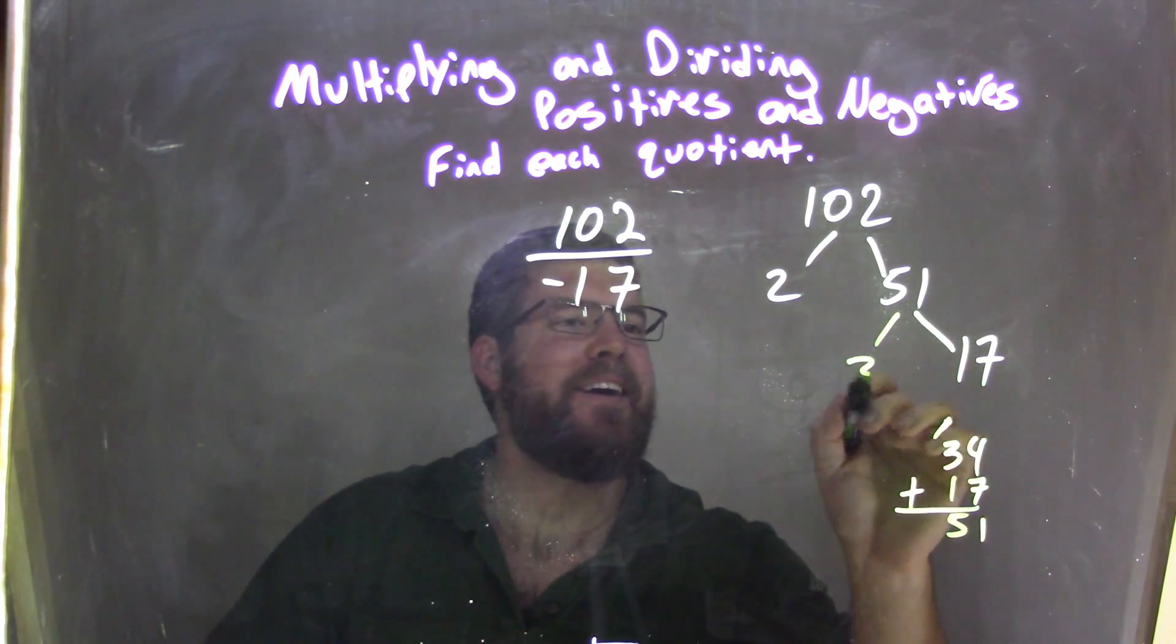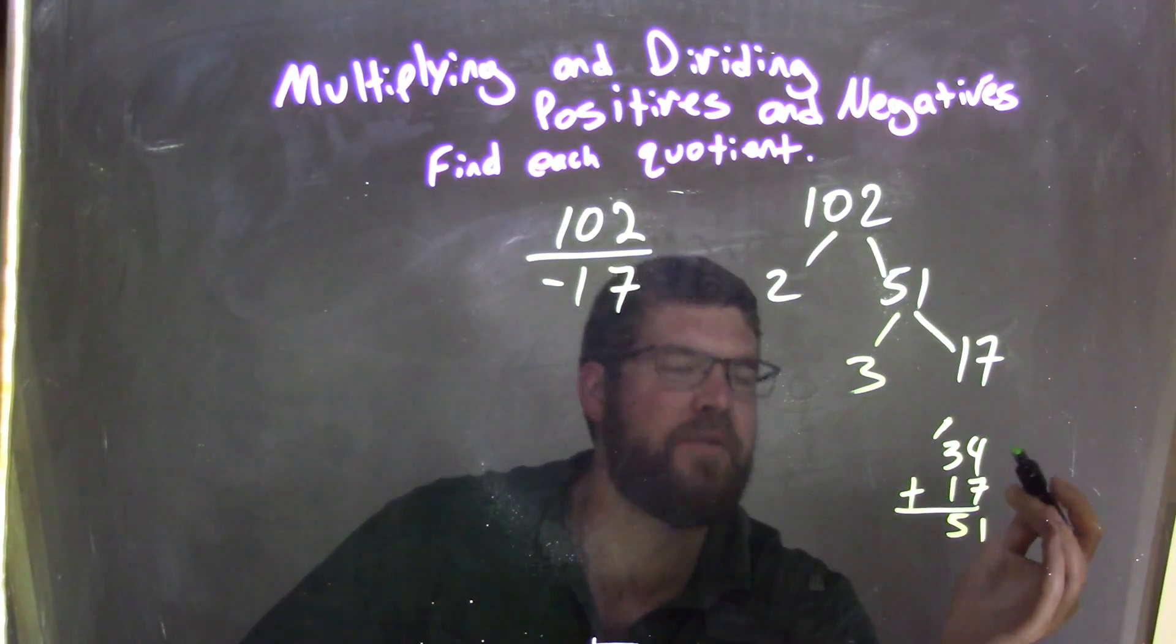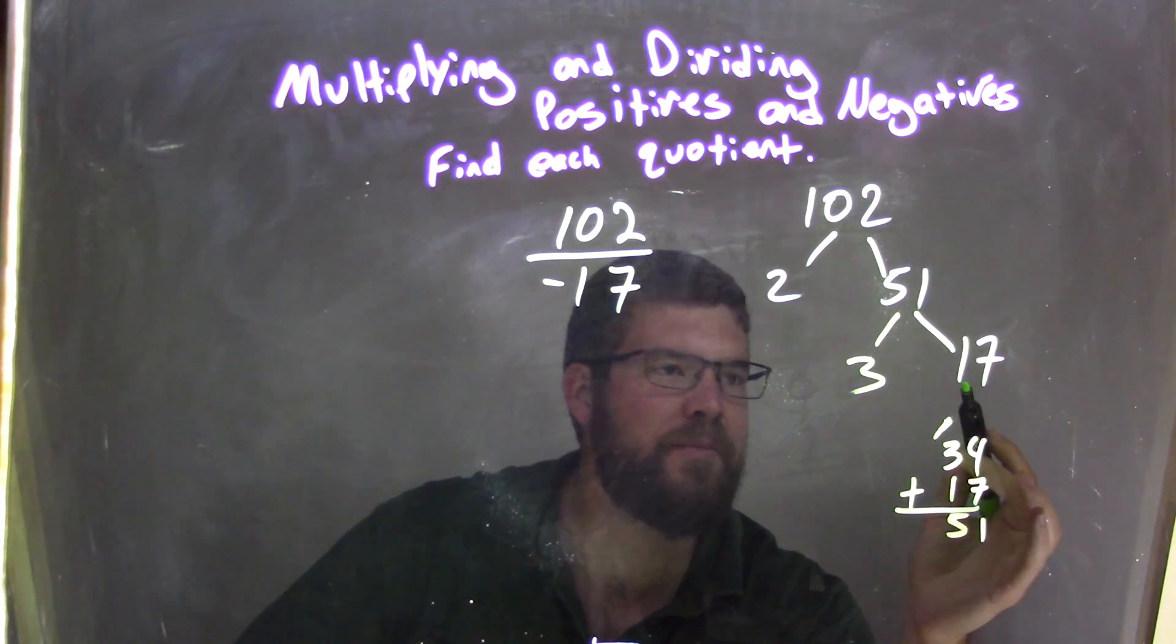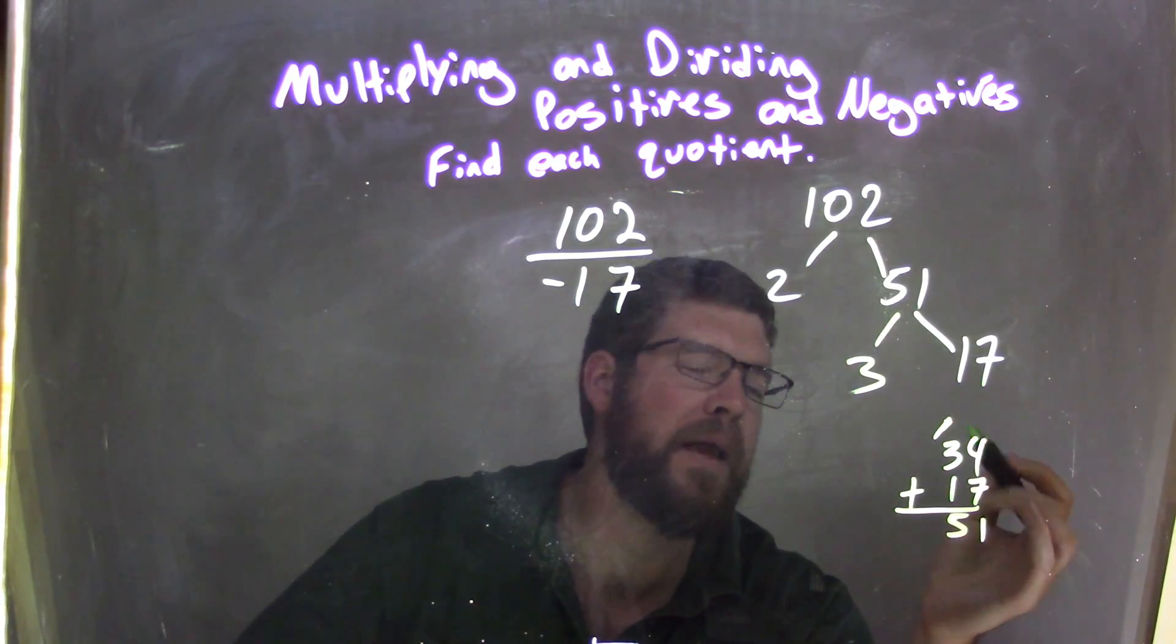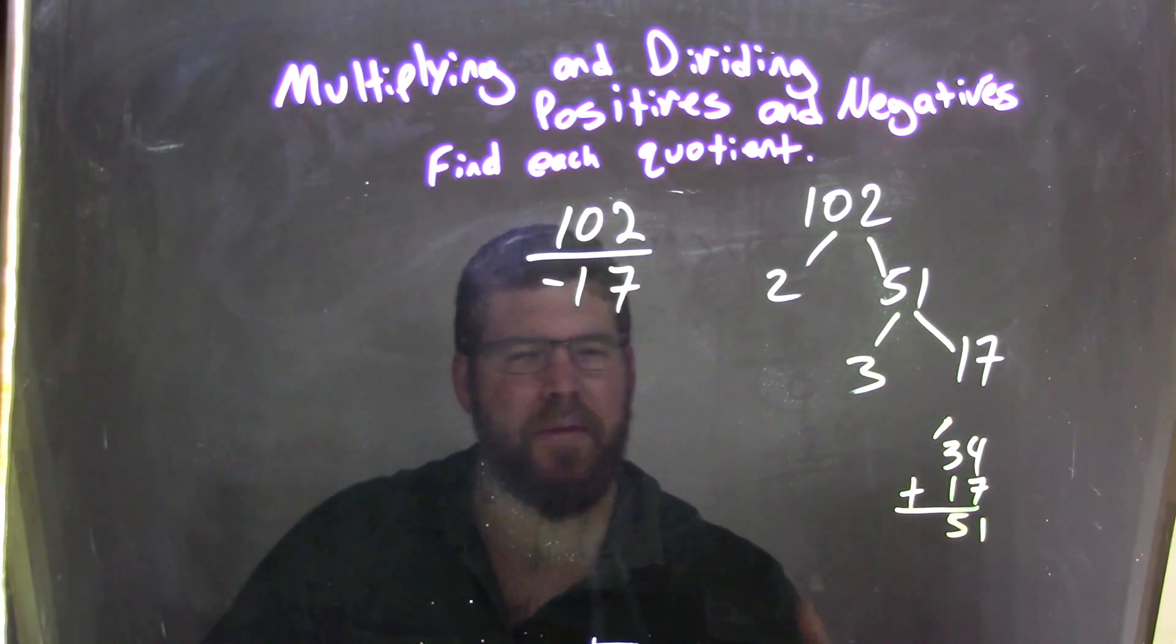And so 17 times 3 is 51. So if you need any questions about that, 34 is 2 times 17. We just added 17 twice, got 34, and then I add another 17 to get 51, so 3 times 17 is 51. This one was tricky.